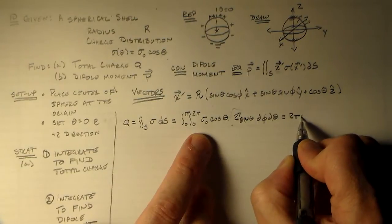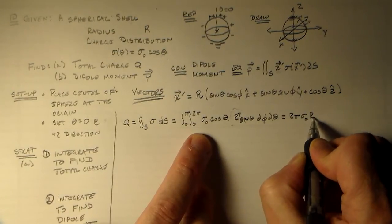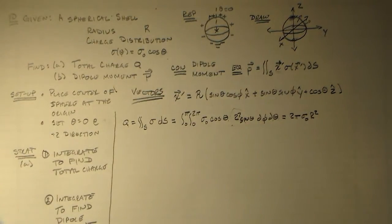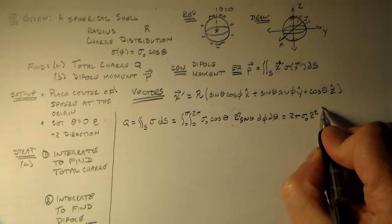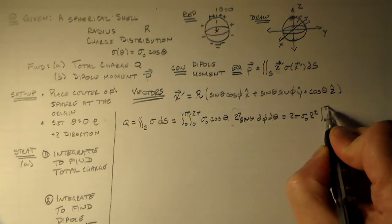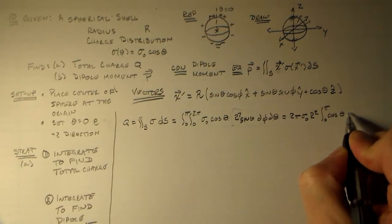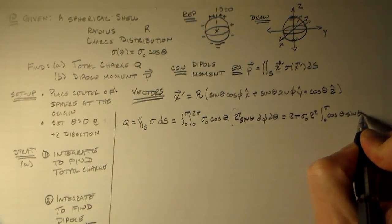So we put all this together here. We have no phi dependence. So we have a 2 pi. And then we have our sigma naught and we have our R squared. So that looks all right to me so far. Then we integrate from 0 to pi, cosine theta, sine theta, d theta.